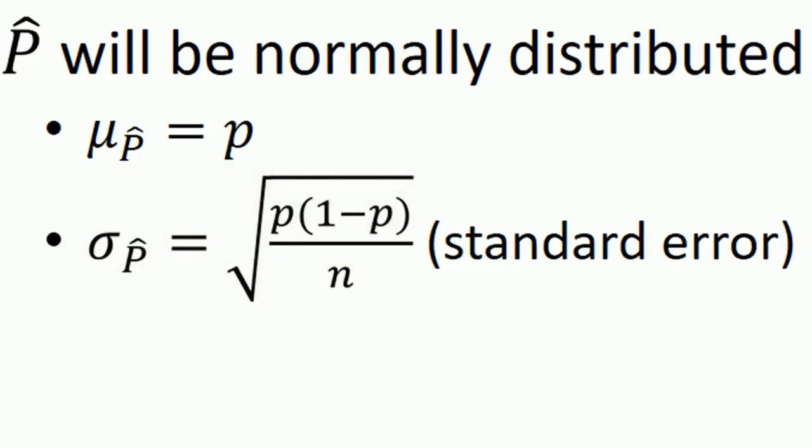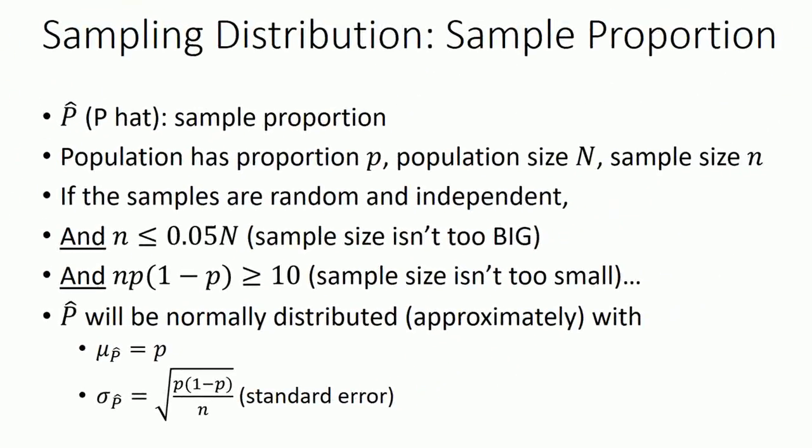Anyway, you can just put that in a calculator, and that's your standard error, and then you know what the sampling distribution is. And once you have a sampling distribution, you can answer questions about how likely this or that may be for the sample proportion.